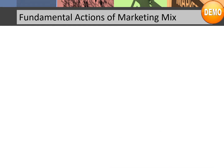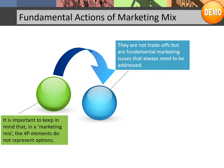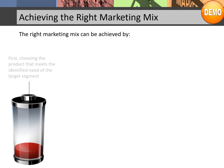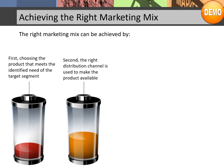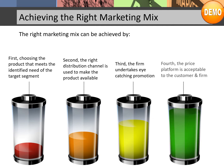It's important to keep in mind that in a marketing mix, the 4 P elements do not represent options. They are not trade-offs but are fundamental marketing issues that always need to be addressed. Hence, they are the fundamental actions that marketing requires, whether determined explicitly or by default. The right marketing mix can be achieved by: first, choosing the product that meets the identified need of the target segment; second, using the right distribution channel to make the product available; third, the firm undertakes eye-catching promotion; fourth, the price platform is acceptable to the customer and firm.